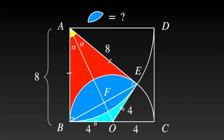Angle ABO is equal to angle AEO is equal to 90 degrees. So in the red triangle AOB, tangent alpha is equal to OB over AB, which is equal to 1/2. Triangles ABF and AEF are congruent, so angle AFB is equal to angle AFE, which means AF is perpendicular to BE. So angle OBF is equal to angle OEF is equal to alpha.